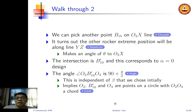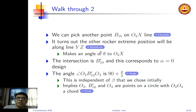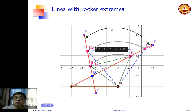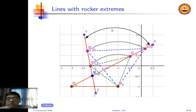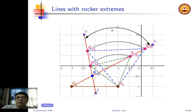It turns out that the rocker extreme positions will lie along a line. If you join B'1a and B'1b, they fall along a single line Y. As you make choices along O2X, the corresponding rocker extreme positions are going to lie along this line Y. The key geometric fact is that the O2X line and this Y line make an angle of theta — as marked in the figure.